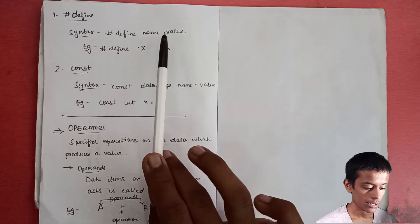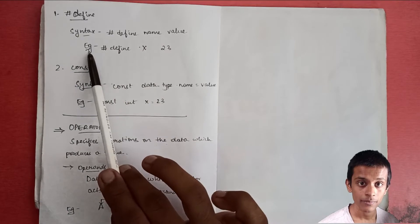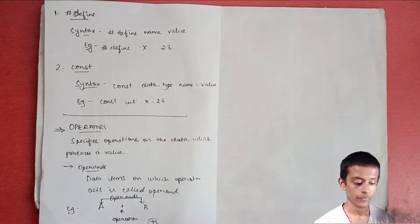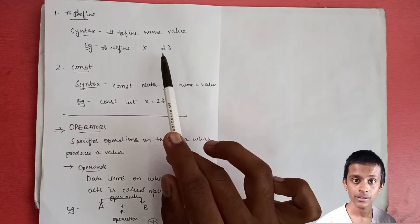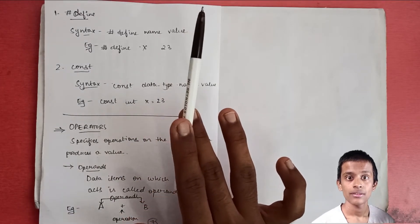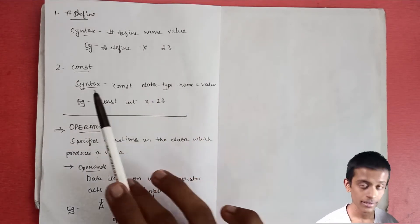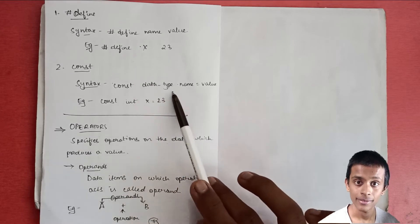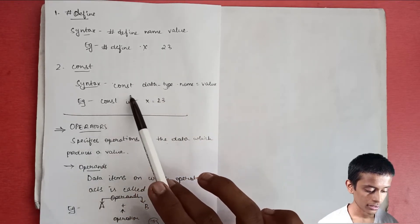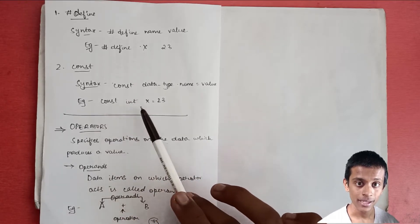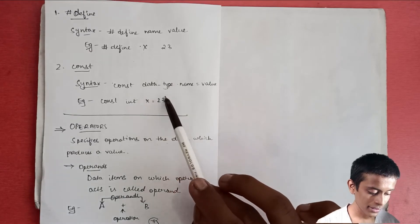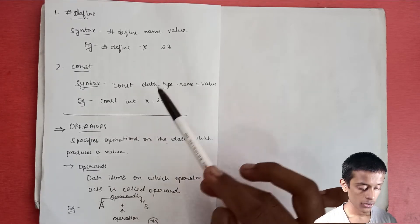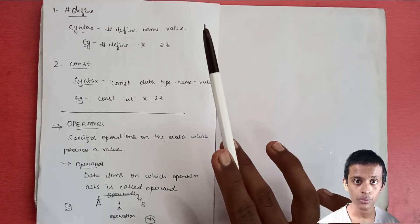For #define, the syntax is: '#define NAME VALUE' — for example, '#define X 23'. Here variable X is given a constant value 23, which cannot be changed; if you use X anywhere in the program, it will directly be written as 23. For the const variable syntax: 'const data_type name = value' — for example, 'const int x = 23', which defines the constant value 23 to x. Both methods give the same output and you can use either as per convenience.